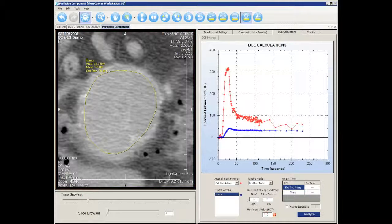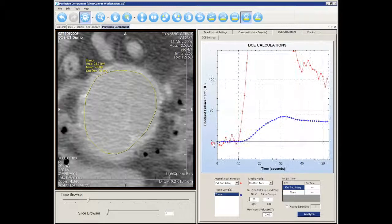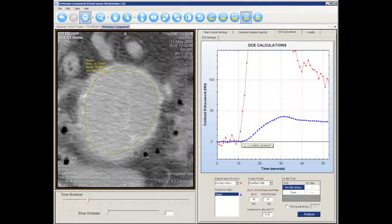We can determine the onset time of contrast uptake by zooming into the graph. It is 10 seconds for the artery and 11 seconds for the tumor. We can enter these values into the onset time box.